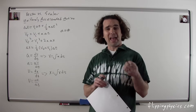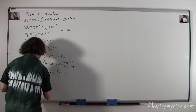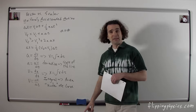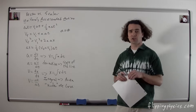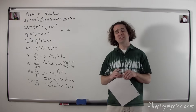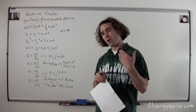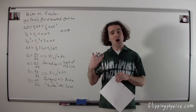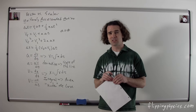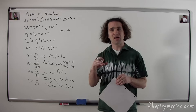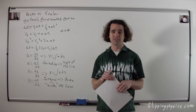Also, you need to remember what the derivative and the integral actually mean. The derivative means literally the slope of the line, and the integral means the area under the curve — where "under" means the area between the curve and the x-axis. Area above the x-axis is positive, and area below the x-axis is negative.